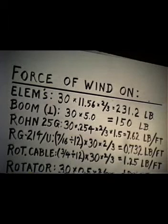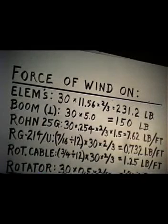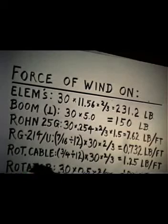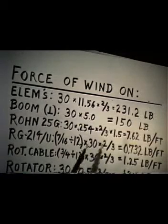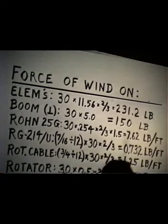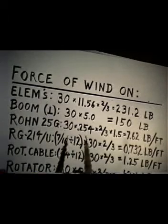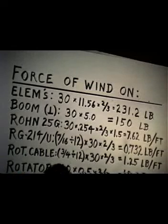If we want to consider how much wind loading there is on that boom when it's turned around the other way, it's 30 pounds per square foot times 5.0 square feet. We don't use a rounding factor on that because we say that's square stock, so we have to use the flat surface calculation. It's 150 pounds if the beam is turned around that way.